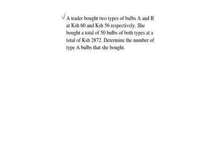at 60 shillings and 56 shillings respectively. She bought a total of 50 bulbs of both types at a total cost of 2,872. Determine the number of type A bulbs that she bought.